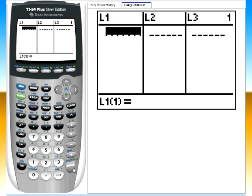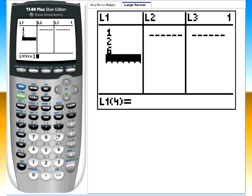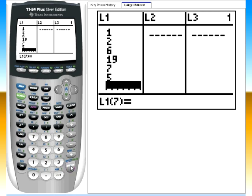Let's say I want to find the median of a very small data set. I'm just going to make up some numbers: 1, enter, 2, enter, 6, enter, 19, enter, 7, enter, and 5, enter. That's my data set. However many numbers you have, you just keep typing them that way.